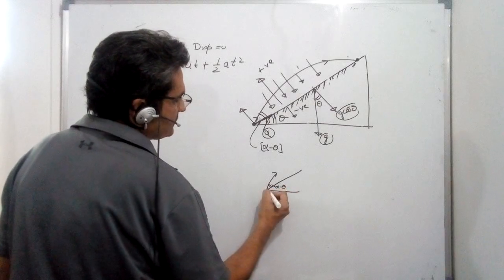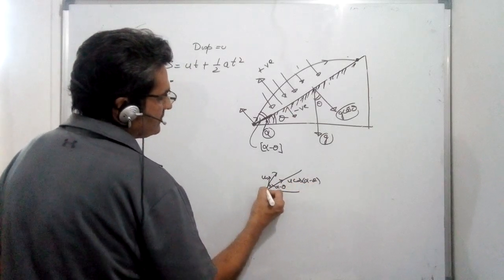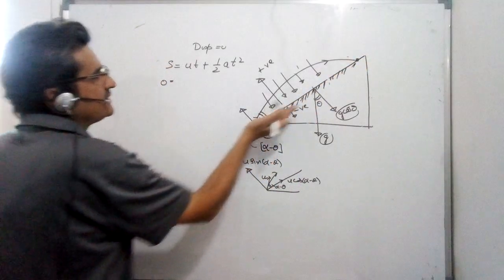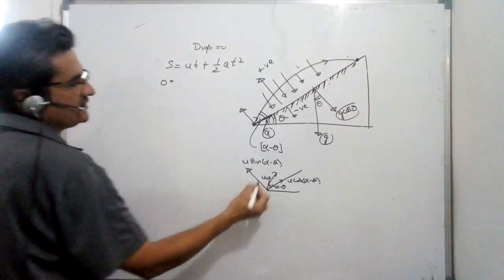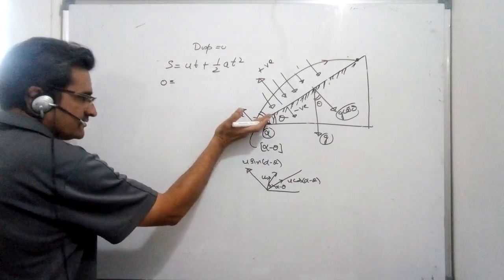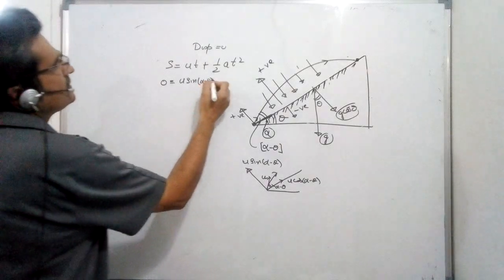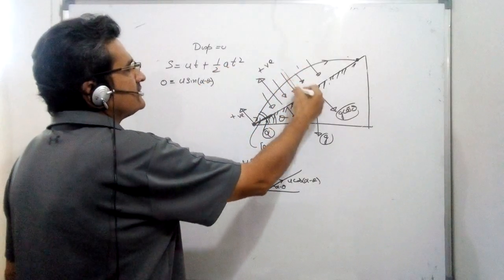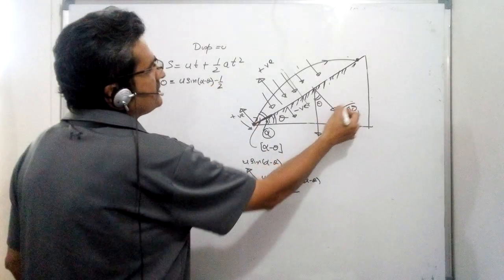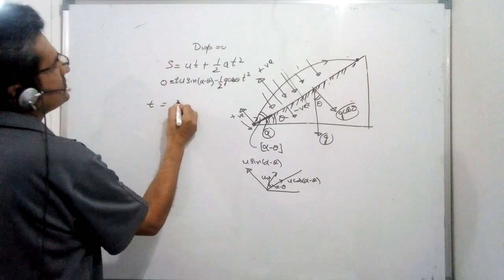The projectile is thrown at angle (alpha minus theta) relative to the inclined plane, so the velocity component along the plane is U cos(alpha minus theta), and the component perpendicular to the plane is U sin(alpha minus theta). Taking this perpendicular direction as positive, the initial velocity is U sin(alpha minus theta). The acceleration G cos theta opposes this direction, so it is taken as negative: minus half times G cos theta.